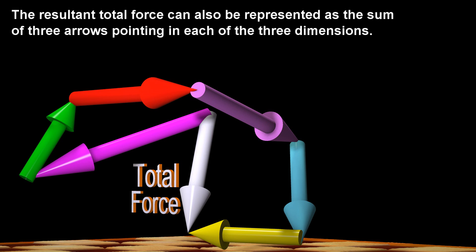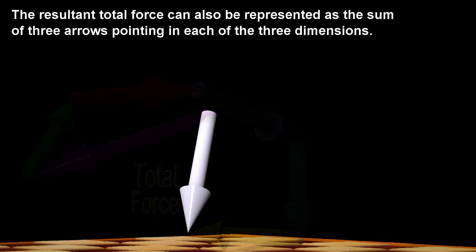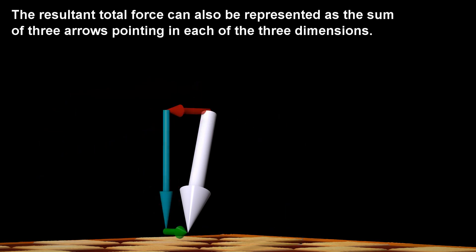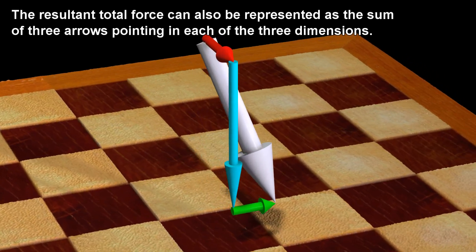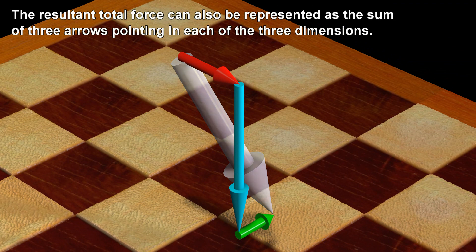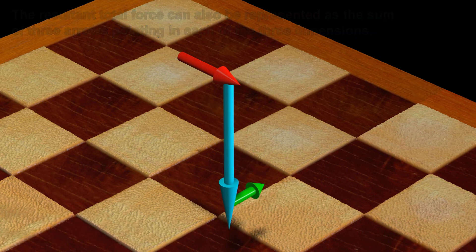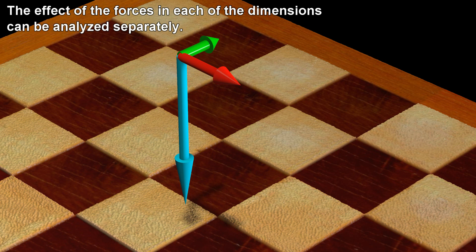The resultant total force can also be represented as the sum of three arrows pointing in each of the three dimensions. The effect of the forces in each of the dimensions can be analyzed separately.